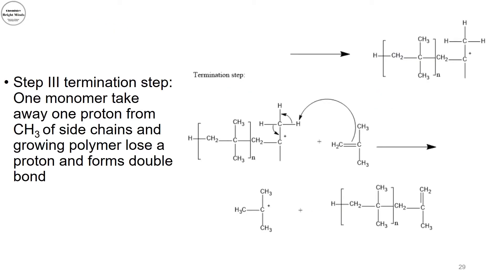This living polymer will grow until a certain point where a termination step occurs. In the termination step, one of the monomers takes away a proton. You can see here I have this carbon cation, and instead of forming a bond between the carbon cation and the double bond of a monomer, it takes away one of those hydrogens. Once that hydrogen is taken away, a double bond forms between those two carbons, and the growing polymer chain stops — now I have an unsaturated polymer.